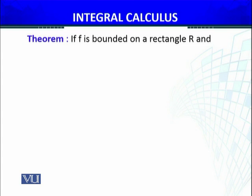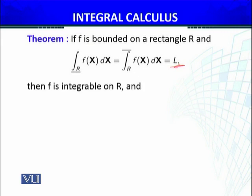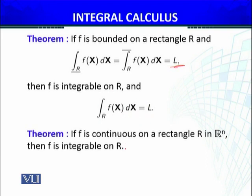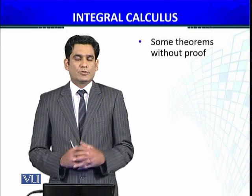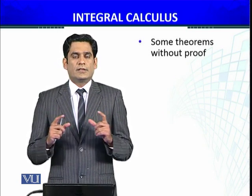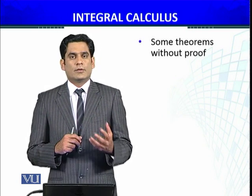This can be considered an alternative definition of Riemann integrability for functions of more than one variable, as in the one-variable case. Next theorem: if f is bounded on a rectangle R and the lower integral equals the upper integral and equals a finite number L, then f is integrable on R and the integral of f(x) dx equals L. Also, if f is continuous on a rectangle R in Euclidean space ℝⁿ, then f is integrable on R — continuous functions on a bounded domain are integrable.